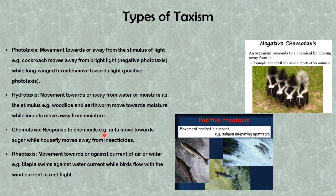Chemotaxis describes response to chemicals. Ants move towards sugar — positive chemotaxis — while house flies move away from insecticide — negative chemotaxis. Rheotaxis describes movement towards or against a current of air or water. Tilapia swims against water current, which is negative rheotaxis, while birds flow with wind current in migratory flights — positive rheotaxis. Salmon migrating upstream is an example of movement against current, while humans moving away from the smell of skunk is an example of negative chemotaxis.